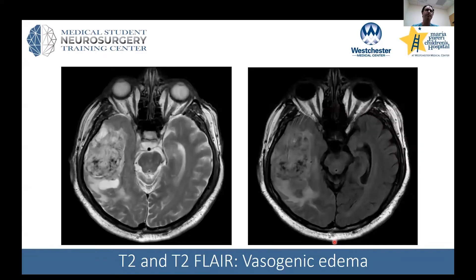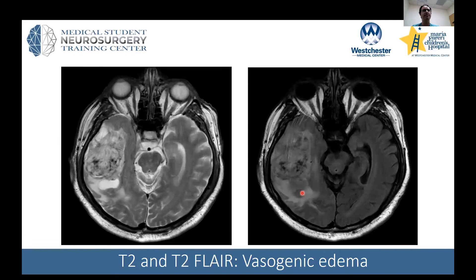T2 and T2 FLAIR are also good at picking up water. Here we see edema — swelling and water in the brain caused by this sizable tumor. This is called vasogenic edema, meaning the blood vessels around the tumor are not normal and are leaking out fluid. You can pick that swelling up with MRI, and also a little bit more faintly on head CT.